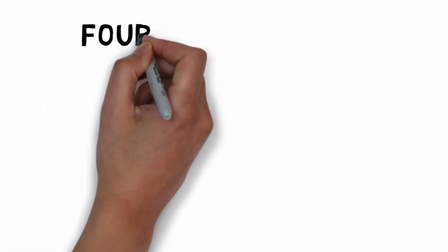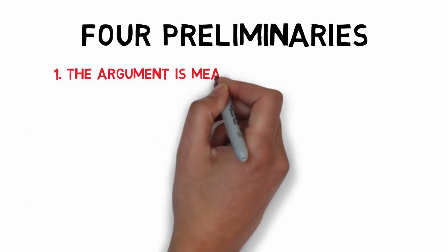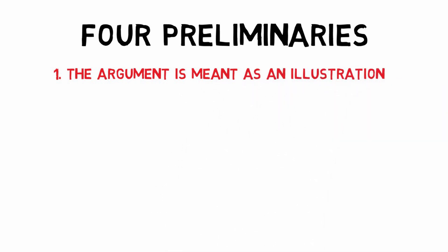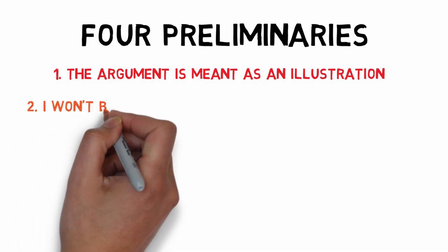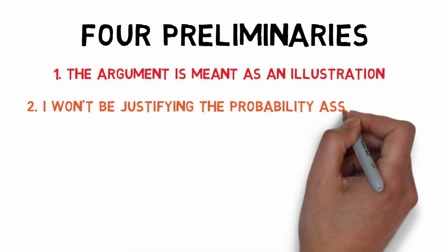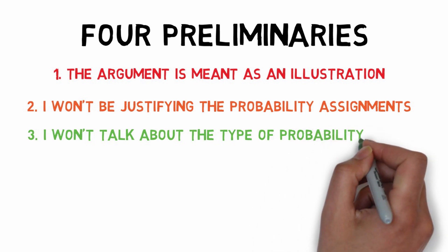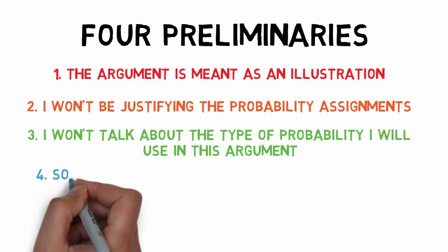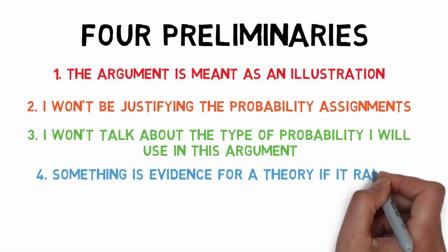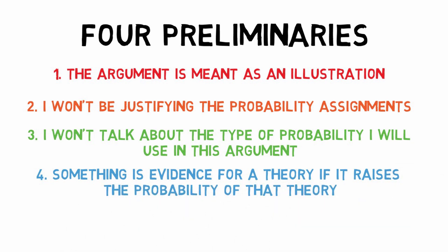Before I let you in on the secret as to how to think about Bayesian probability visually, I've got four preliminaries to run through. First, the argument I will use — the problem of evil — is meant as an illustration only, so I won't be going into it in any detail. Second, I won't really spend any time justifying the probability assignments I give, as these are somewhat arbitrary values used for illustration, so try not to get too hung up on whether they are accurate. Third, I'm not going to discuss different interpretations of probability, such as frequency, propensity, and degrees of belief interpretations. And finally, we're going to think that something is evidence for a theory if it raises the probability of that theory being true, and evidence against a theory if it lowers the probability of that theory being true. If you want to learn more about these preliminaries, I will be doing some future videos on them, so do remember to subscribe.